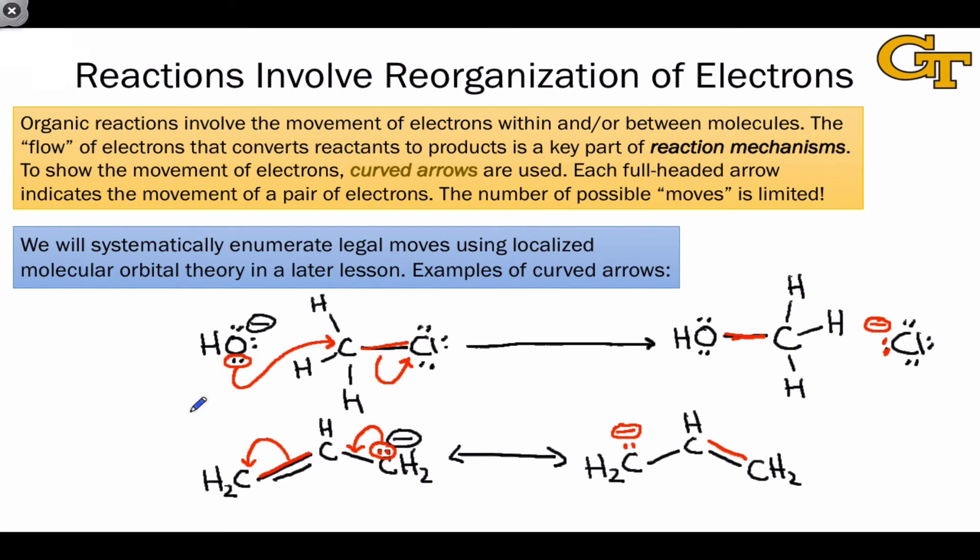So we've seen so far how the curved arrows show us what bonds are made and broken. One final point I want to make before leaving these examples is that the formal charge changes are also implied by the curved arrows. So for example, the hydroxide here is serving as an electron source,